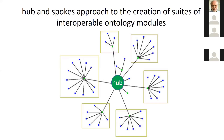The hub and spokes approach underlies the way in which we envisage interoperable ontology modules being created. At the moment, most ontologies are created in ad hoc ways, and so they do not link to other ontologies. People who need two ontologies and try to put them together find that it breaks. People are very frustrated when they try to follow the ontology method to achieve interoperability. And ISO 21838 is an answer to those frustrations.